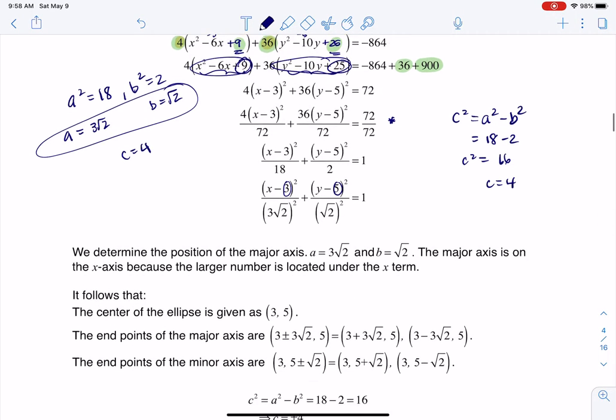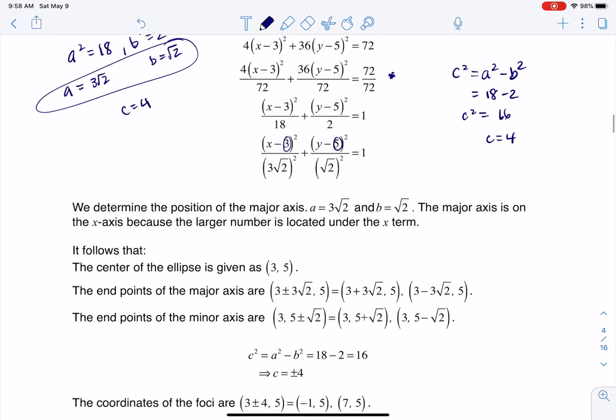If I was gonna graph this thing, I'm gonna go 1, 2, 3, 1, 2, 3, 4, 5—that's great, there's my center. And then what I need to do is I need to move 3√2 units in the x direction. I say in the x direction because if we look back here, the 3√2 was under the x term. If you think about √2, that's about 1.7, so if I multiply that by 3, it's gonna be a little bit less than 6, so maybe it's about 5.1 somewhere in there.